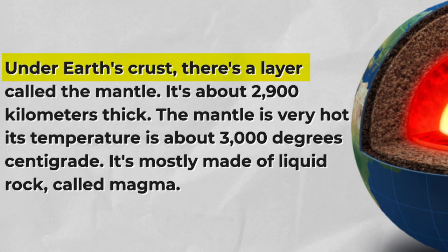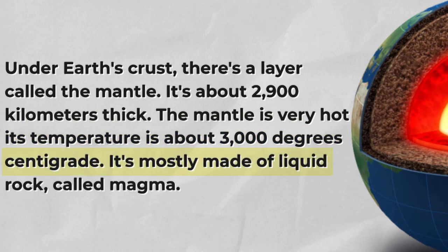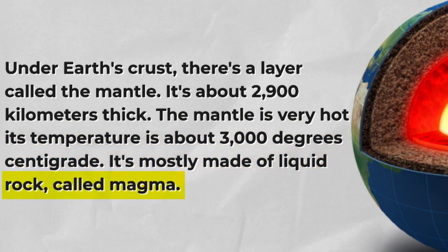Under Earth's crust, there's a layer called the mantle. It's about 2,900 kilometers thick. The mantle is very hot — its temperature is about 3,000 degrees centigrade. It's mostly made of liquid rock, called magma.